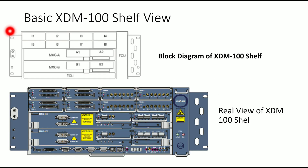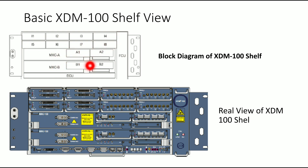This is the basic XTM-100 self-view. The slots I1 to I8 are used for the input-output interface. These are the MXC slots: A1, A2 for slot A and B1, B2 for slot B. This is the FCU and this is the ECU card.